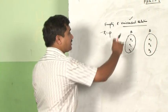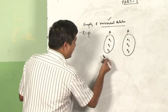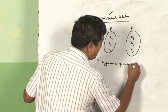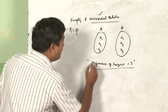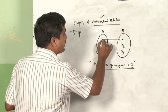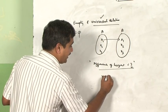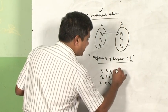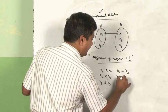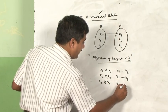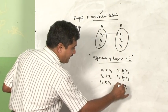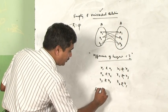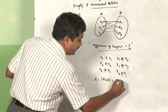To summarize universal relation: if you take the relation 'difference of heights is less than 3 meters' within the same set A = {x1, x2, x3}, every element is related to every other element — x1 to x1, x2 to x2, x3 to x3, and also x1 to x2, x1 to x3, x2 to x1, and so on. All 3×3 = 9 ordered pairs are included, giving R = A×A, which is what we call the universal relation.